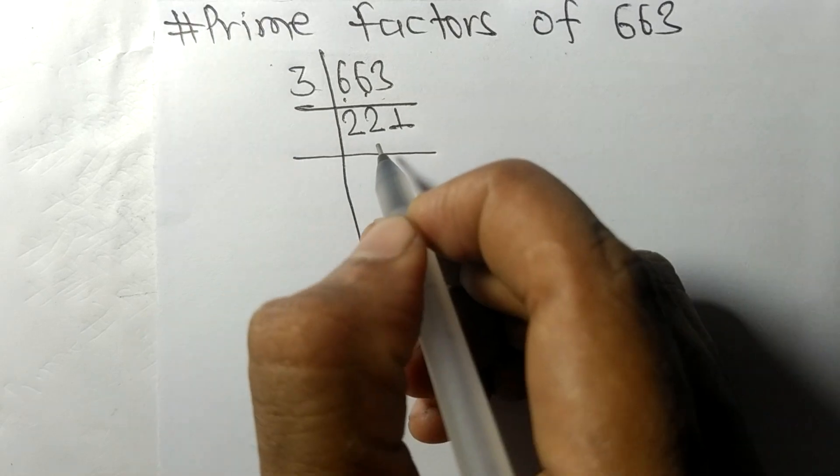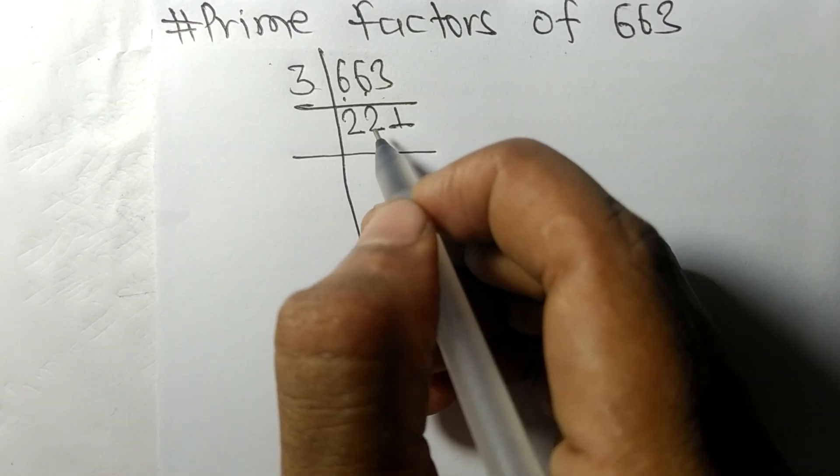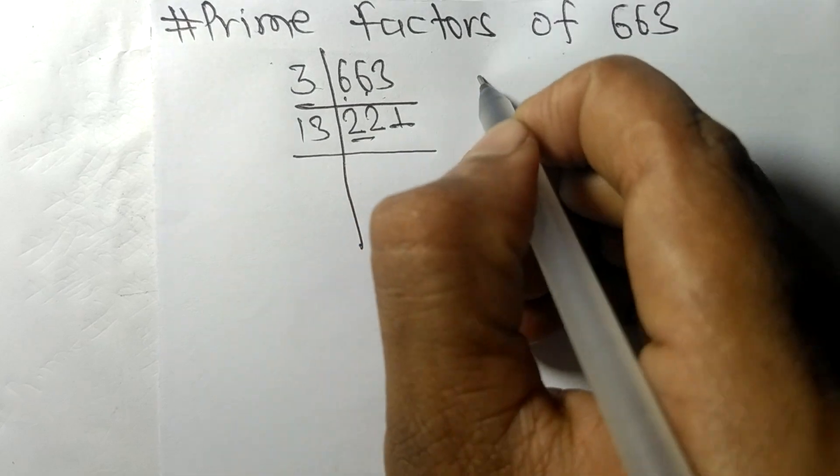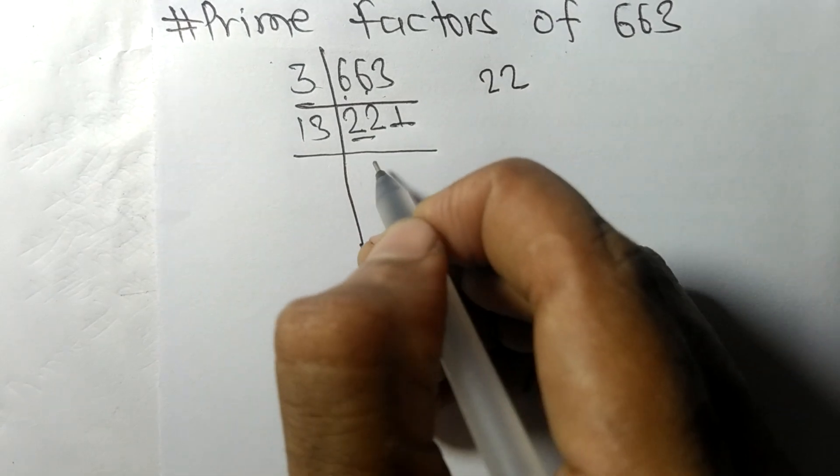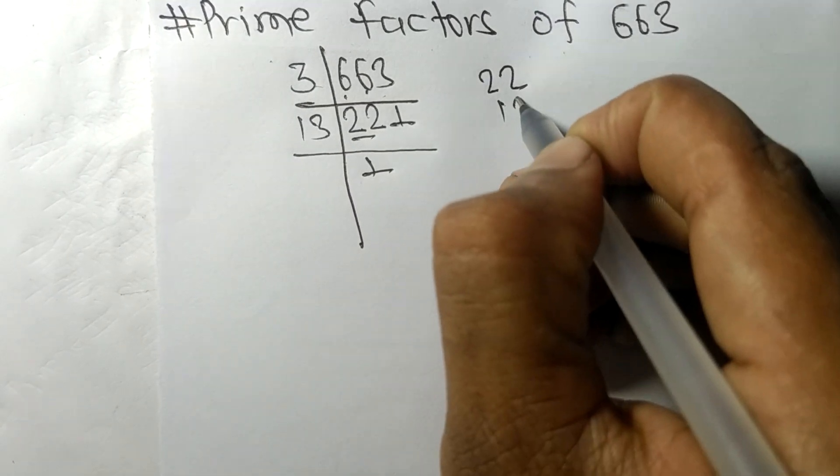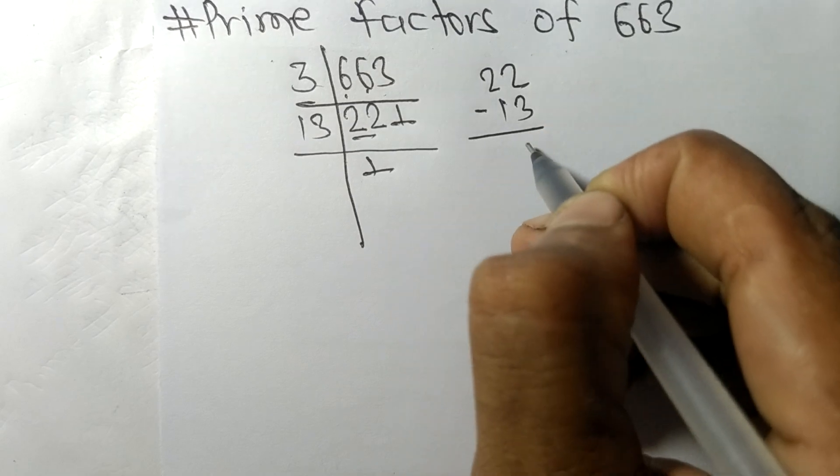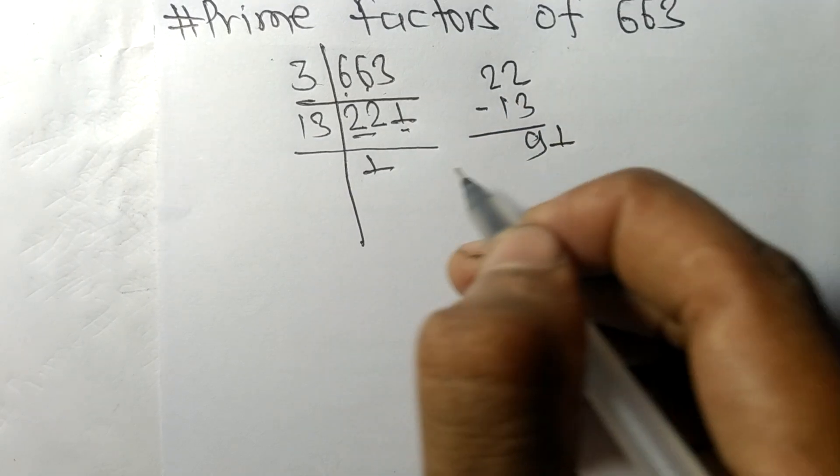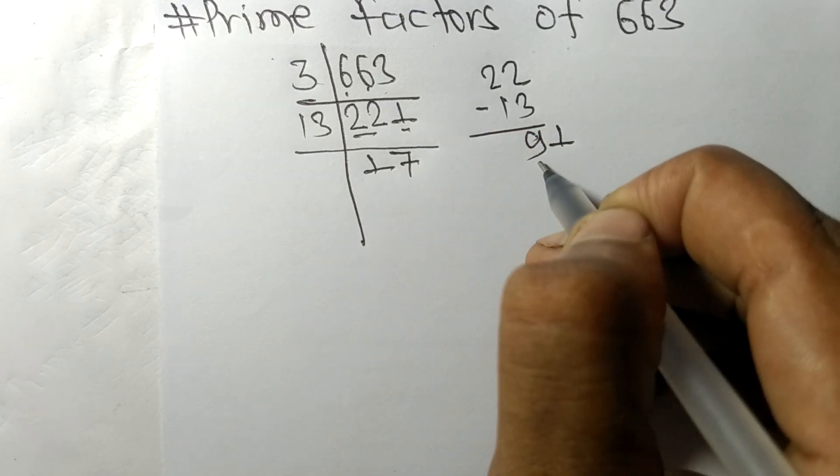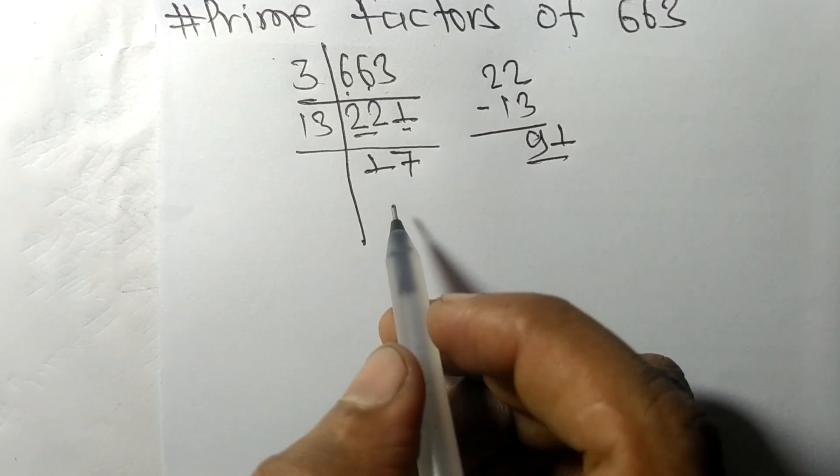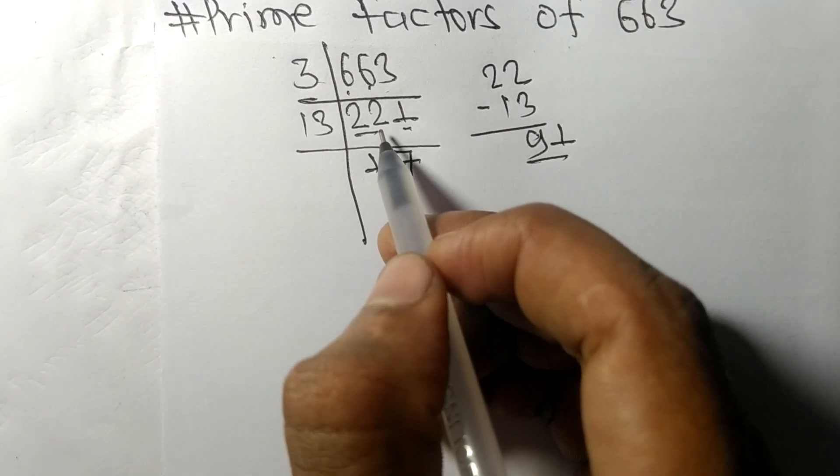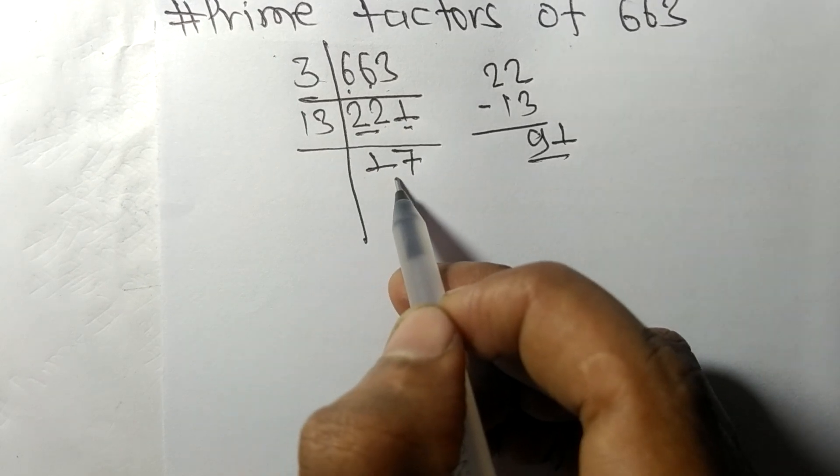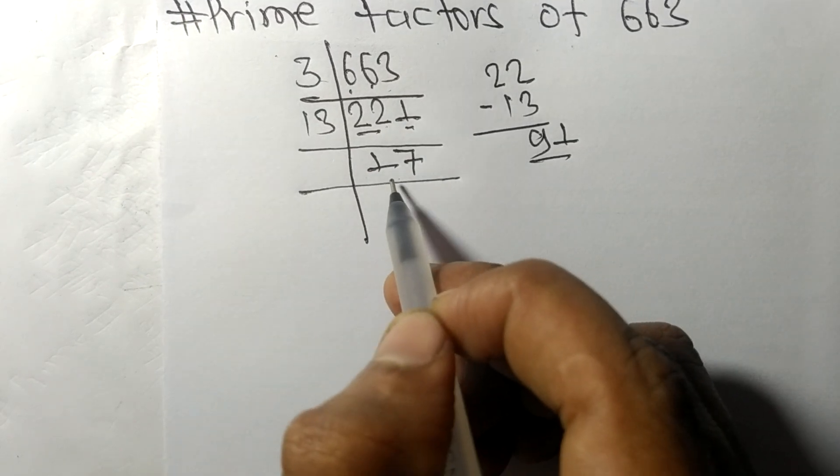221 is exactly divisible by 13. Here is 22, 13 times 1 is 13, remainder 9, and this one 91. 13 times 7 is 91. So on dividing 221 with 13 we get 17.